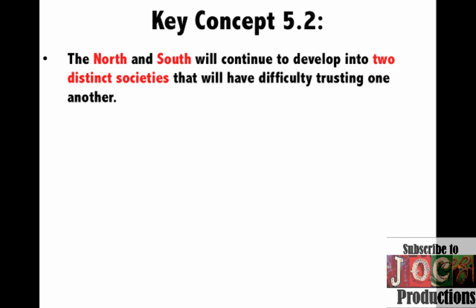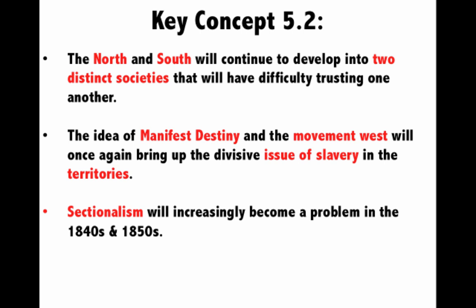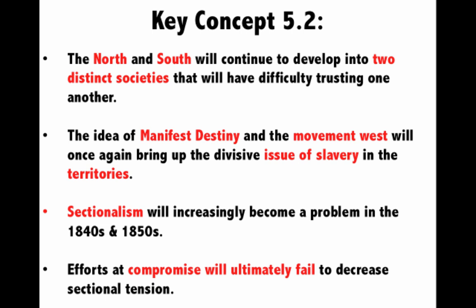The North and the South will continue to develop into two distinct societies that will have difficulty trusting one another. The idea of Manifest Destiny and the Movement West will once again bring up the divisive issue of slavery in the territories. Sectionalism will increasingly become a problem in the 1840s and 1850s, and this thing's going to end in a civil war. And efforts at compromise will ultimately fail to decrease sectional tension.